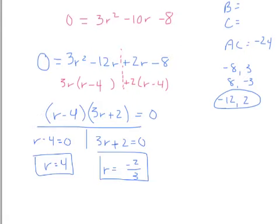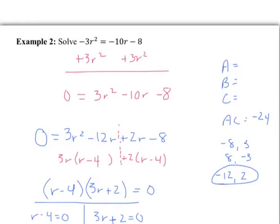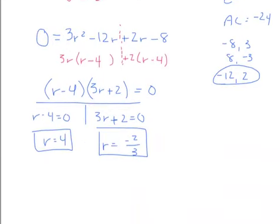Always go back to the original to check your answer. Both answers would indeed work in this problem. Our solution set looks like: R equals, braces, negative two-thirds, comma, four, close brace.